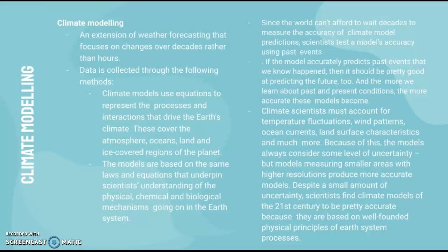Since the world cannot afford to wait decades to measure the accuracy of climate model predictions, scientists test model accuracy using past events — if a model accurately predicts past events, it should be reliable for the future too. However, climate scientists must account for temperature fluctuations, wind patterns, ocean currents, land surface characteristics, and much more, which introduces uncertainty. Models measuring smaller areas with higher resolutions produce more accurate results, as they need to account for fewer factors at a smaller scale.